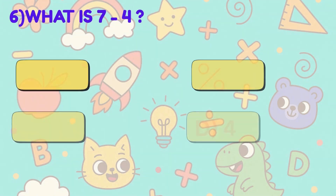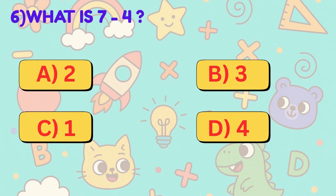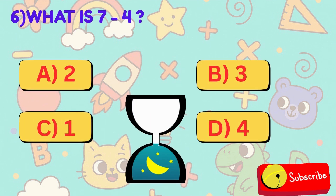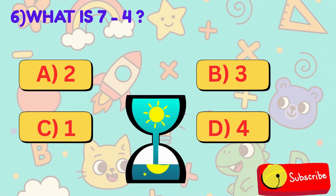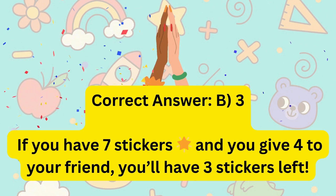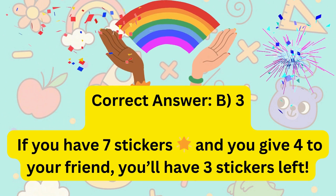6. What is 7 minus 4? Is it A, 2, B, 3, C, 1, or D, 4? Correct answer is B, 3.